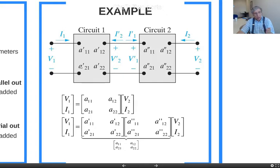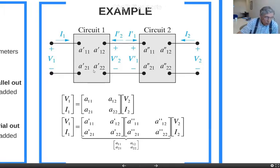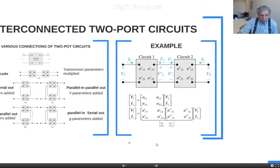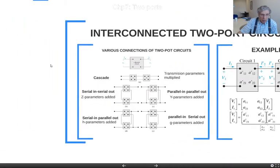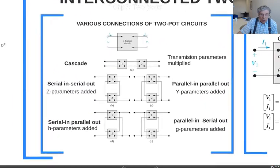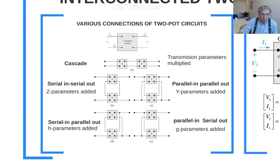Just to remind you: when we say the two circuits are connected in cascade, what we are saying is that the output of the first circuit is connected to the input of the second circuit. If you make this connection, that is called a cascade connection.